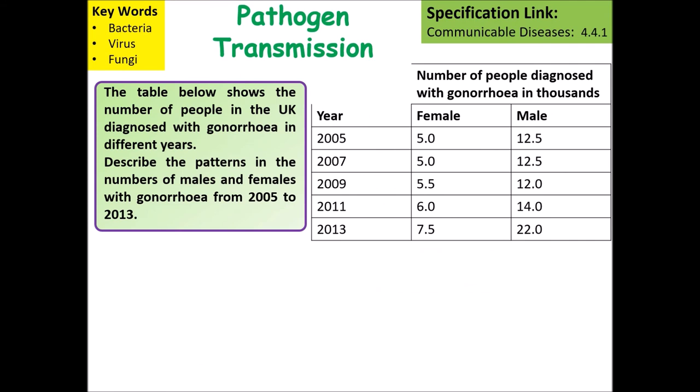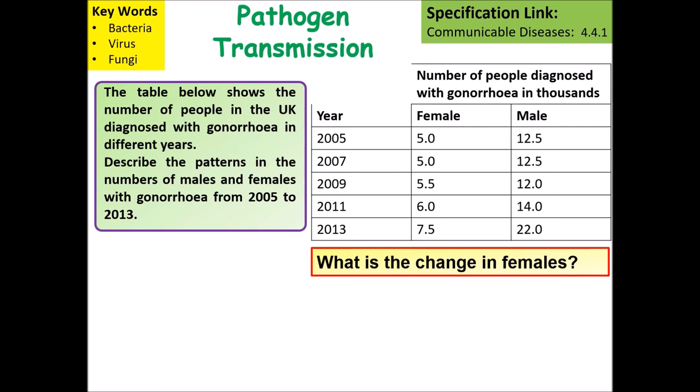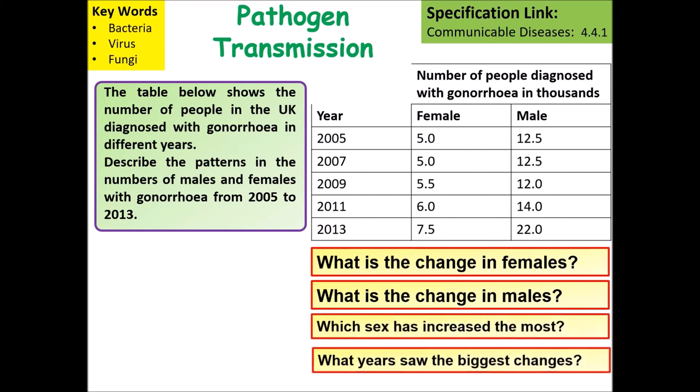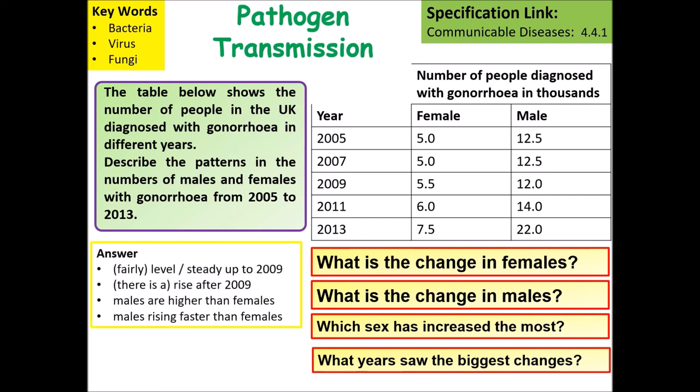The second question refers to a table showing infection rates of gonorrhea over the years. Describe the patterns in the number of males and females with gonorrhea from 2005 to 2013. Sample answers include: the level is steady up to 2009, then begins rising; males are higher than females, and males are rising faster than females.